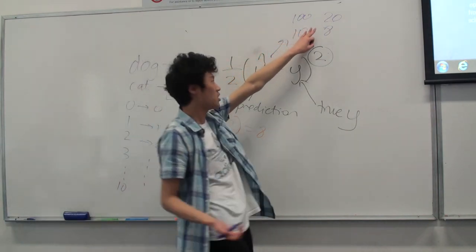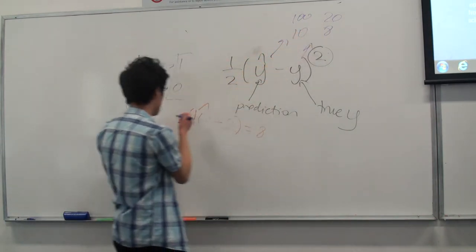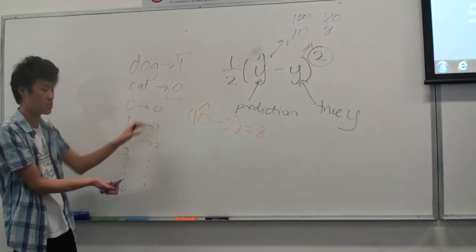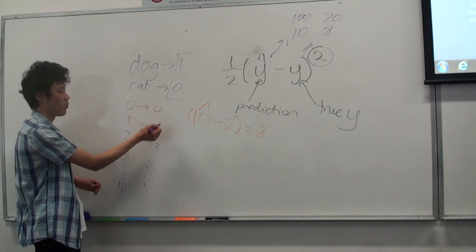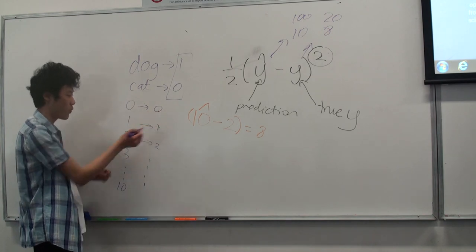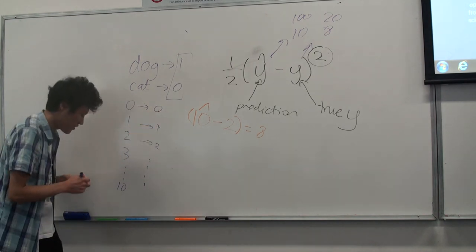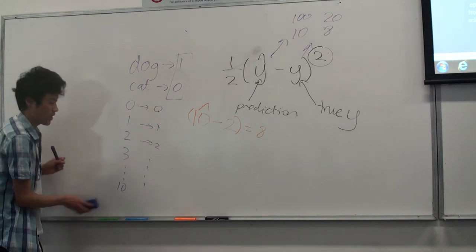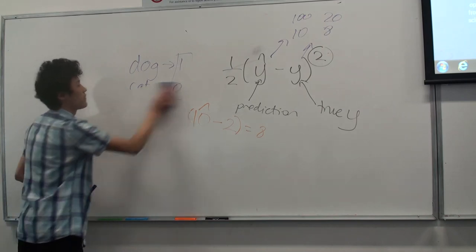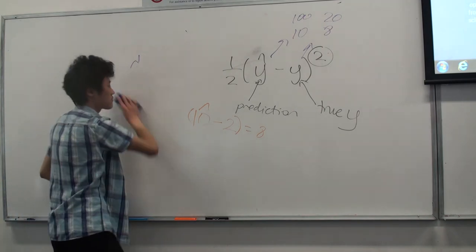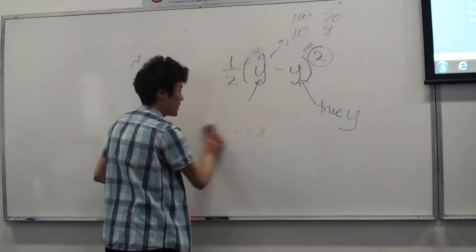We need to find a way to compute the cost in relation to discrete classes, not continuous variables. This is discrete — there are no numbers between 0 and 1. It's just 0 and 1. The cost function we are going to make is a bit different.